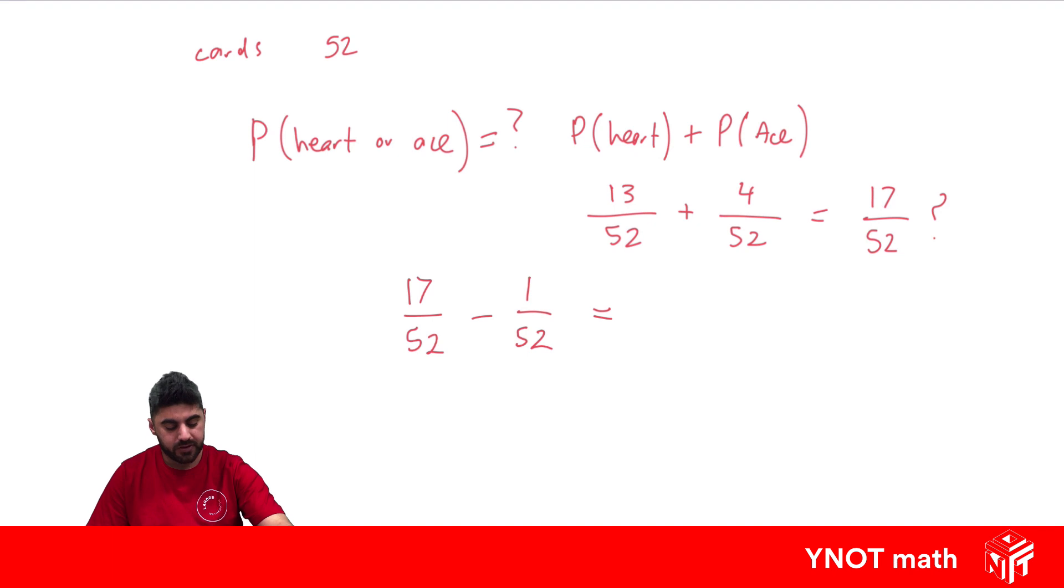And doing this gives us 16 out of 52. And these are both divisible by 4 to simplify it. And we get 4 out of 13. That is the correct probability. So that one is actually incorrect.